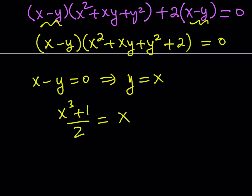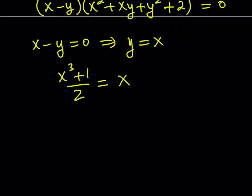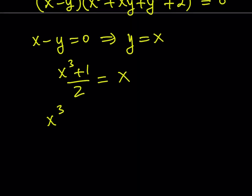What am I going to do next? Well, cross multiply and simplify this expression. This is going to give me x cubed plus 1 equals 2x. Put everything on the same side. You know the story. And we get this.